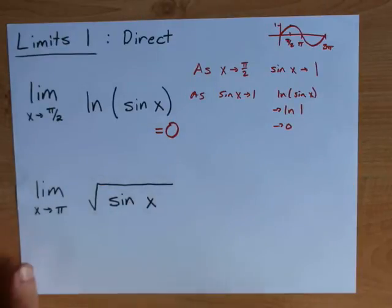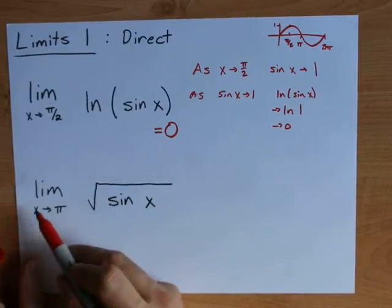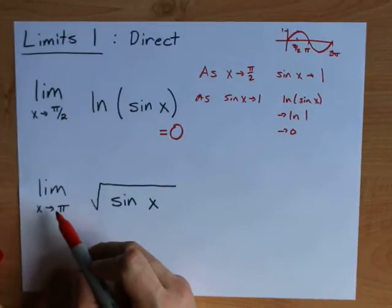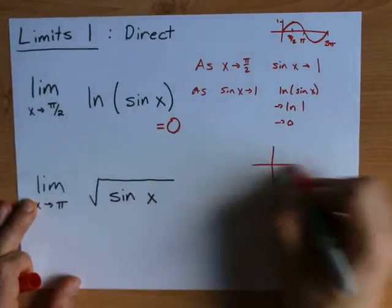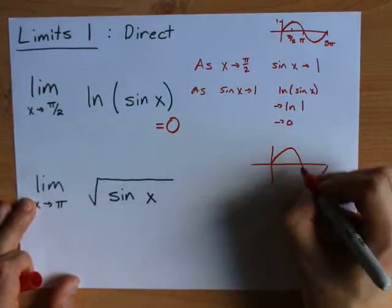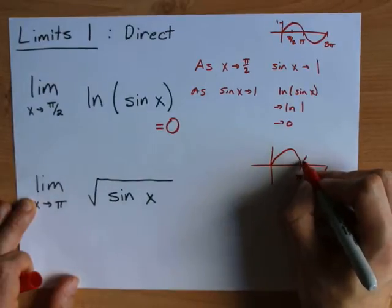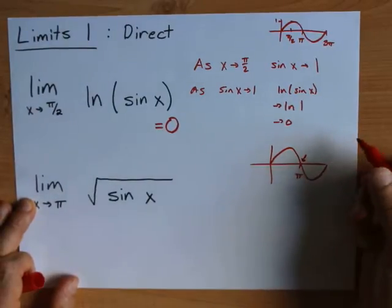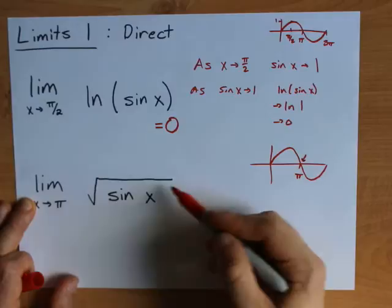Now you do have to be careful. This is asking you for the limit as x approaches pi. And if you take a look at the sine graph at pi, which is here, it is 0. So you may be tempted to simply take the square root of 0.